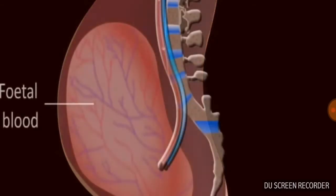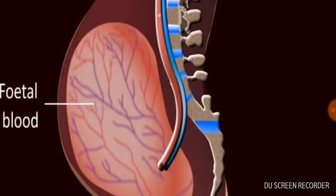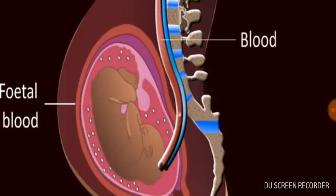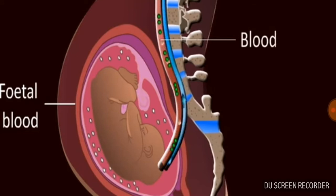An RH positive child develops in the womb of an RH negative mother. When fetal and maternal blood come closer during placenta cutting after childbirth, small amounts of RH antigen of the developing fetus enter the maternal blood and stimulate her WBCs to produce an antibody called anti-RH factor, which remains effective in maternal blood for several months or years.